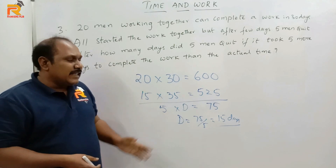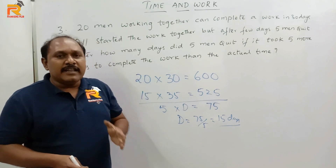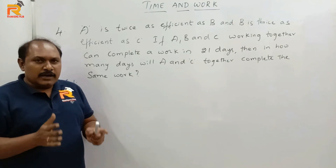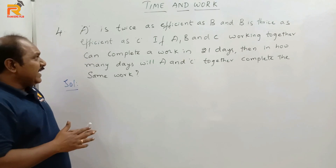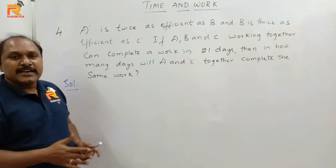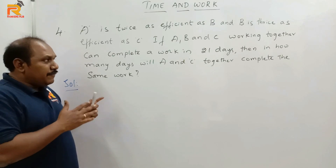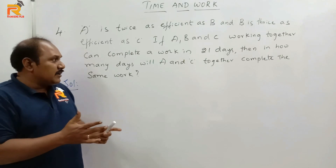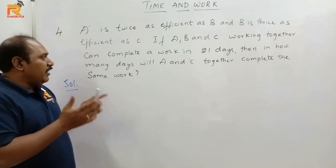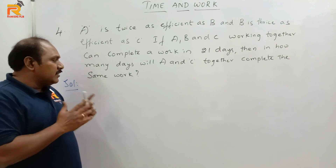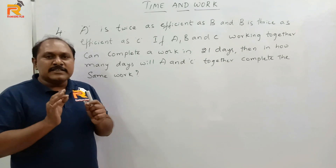Thinking like this will help you answer the question in a very simple way. Now let us see the fourth question. This is a question based on efficiency. A is twice as efficient as B and B is thrice as efficient as C. If A, B and C working together can complete a work in 21 days, then in how many days will A and C together complete the same work?